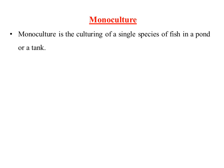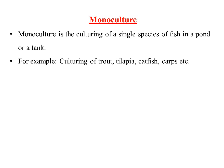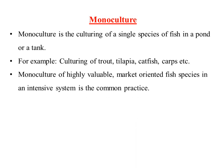Monoculture is the culturing of a single species of organism. In aquaculture, a single species of fish is cultured in a pond, tank, or any other system — that is referred to as monoculture. Various species such as trout, tilapia, catfish, and carp are also cultured in a monoculture system. In general, fishes cultured commercially using this method require intensive management.